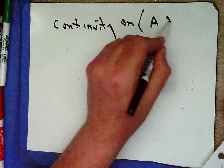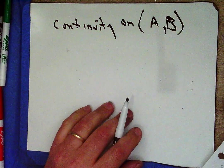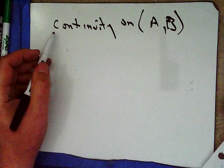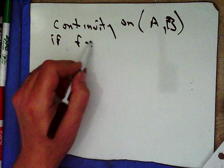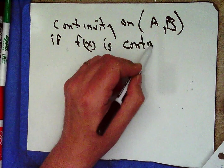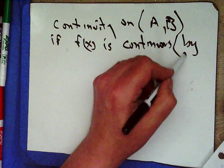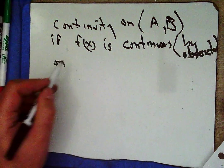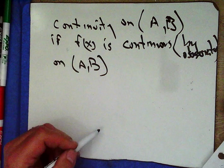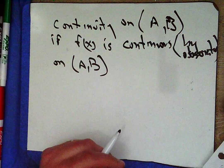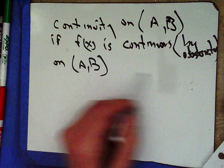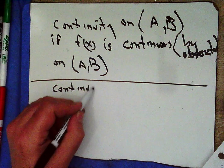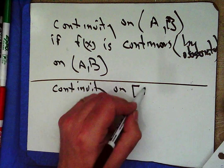Continuity on a to b: if f of x is continuous, we can say by observation there's continuity on the open interval. That's straightforward. Now let's talk about how we determine continuity on the closed interval.